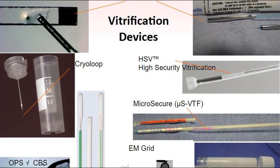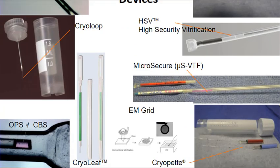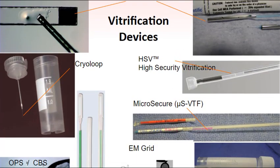Over 25 different vitrification device systems have been developed for the experimental or clinical vitrification of embryos. Shown here are commercialized and non-commercial systems used in Clinical Assisted Reproductive Technology, including open and closed systems as well as aseptic closed systems. The latter are double container systems that prevent the actual vitrification device from coming into direct contact with liquid nitrogen, thus preventing any possible cross-contamination in storage.